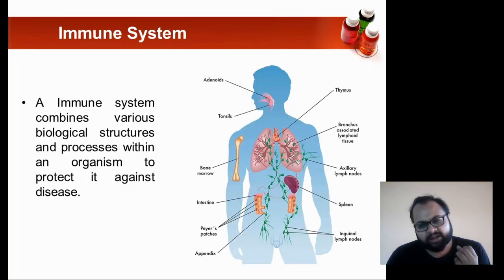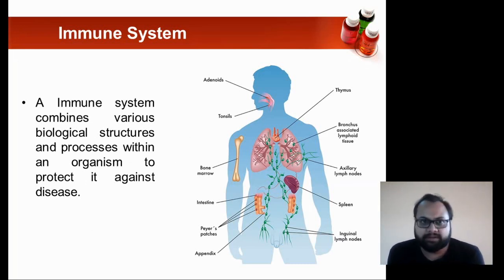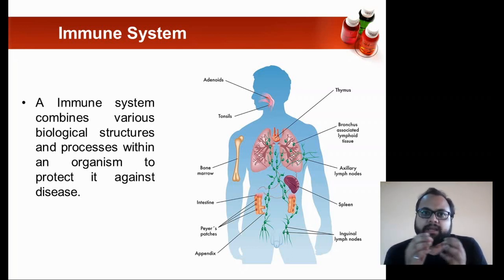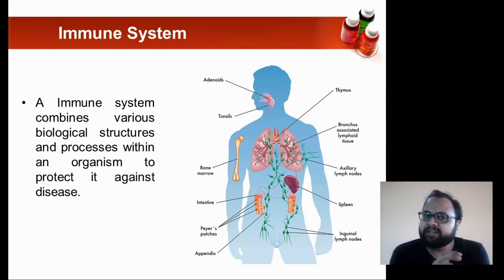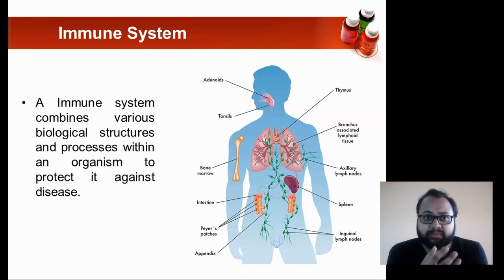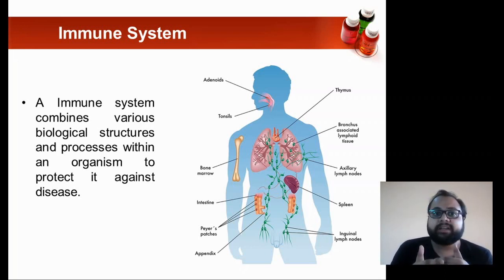Our human immune system is very complex and it operates at multiple levels — at the level of molecules, cells, organs, and organisms. Each individual has a very unique immune system and will respond differently based on immunological changes. It also has a combination of various biological structures and processes within the organism to protect it against any sort of disease.